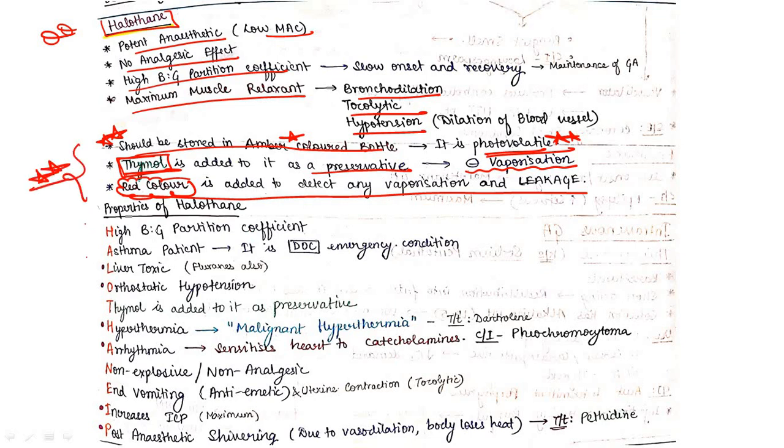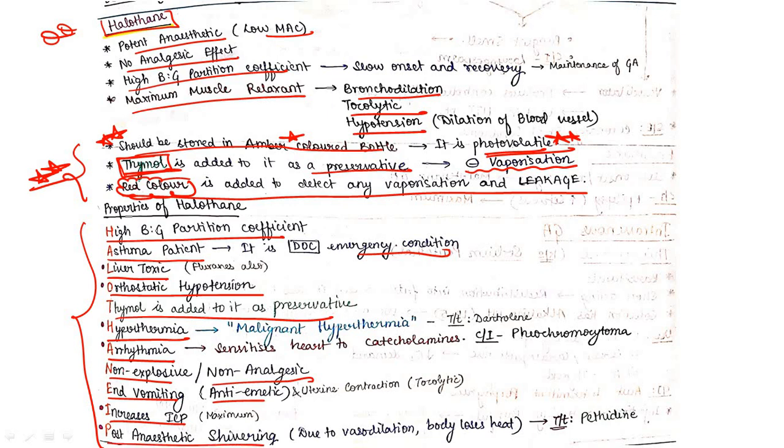Mnemonic for halothane: HALOTHANE-IP. H for high blood gas partition coefficient, A for asthma patient drug of choice in emergency, L for liver toxic, O for orthostatic hypotension, T for thymol added as preservative, H for hyperthermia, A for arrhythmia, N for non-explosive non-analgesic, E for antiemetic, I for increases ICP, P for post-anesthetic shivering.